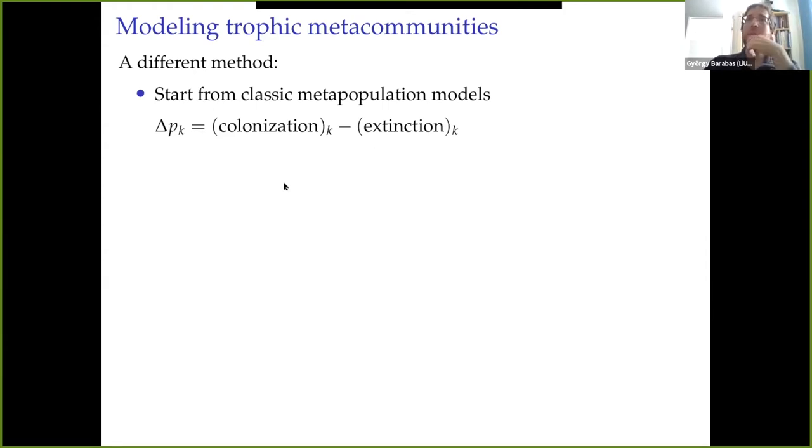How do we make it from a metapopulation to a metacommunity context? Well, first of all, we add an index i so that this is the probability of species i being present in patch k, and the same for colonization extinction likelihoods. And then we have to think about how we model colonization and extinction.